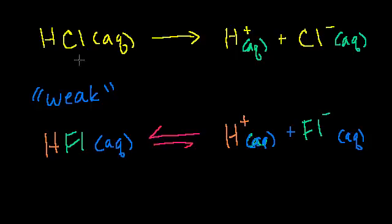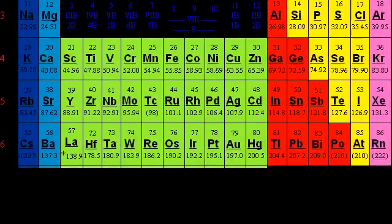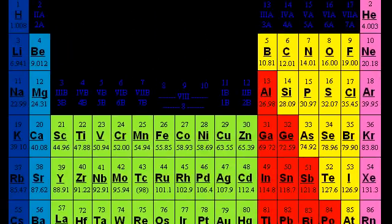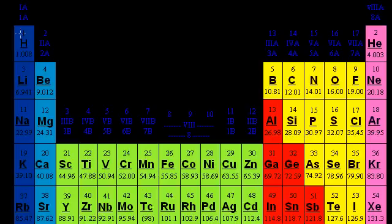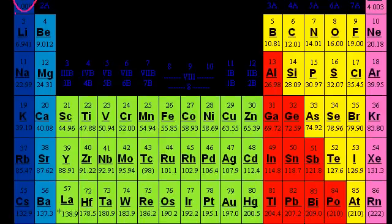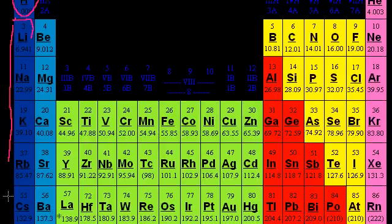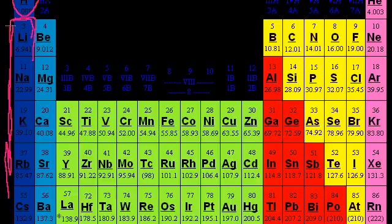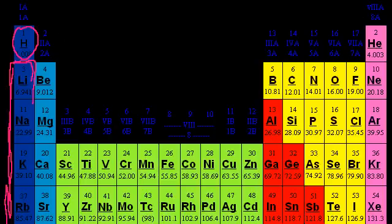You might wonder: aren't fluorine and chlorine both halogens? Why is hydrofluoric acid a weak acid while hydrochloric is a strong one? Hydrogen has exactly one electron in its outermost shell, and its first shell is complete with only two electrons. So when hydrogen forms bonds with halogens, it doesn't completely give up the electron — because if you share the electron, hydrogen gets to 2 and the halogen gets to 8. So hydrogen likes to bond with halogens but doesn't give the electron up completely.